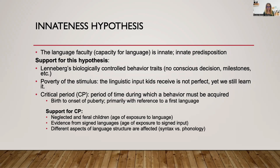Some support for the existence of a critical period comes from neglected children. There have been situations — maybe you've heard of Genie, the wild child. There's a YouTube documentary called 'Genie: Secret of the Wild Child.' It's about Genie, who was discovered around 1974 at about 13 years old. She had been kept basically tied to a potty chair, not spoken to, and beaten for making noise. She did not speak. There was a big team of researchers and doctors and scientists working with her, trying to teach her language. She was able to learn some words, but she was never able to fully acquire grammar.